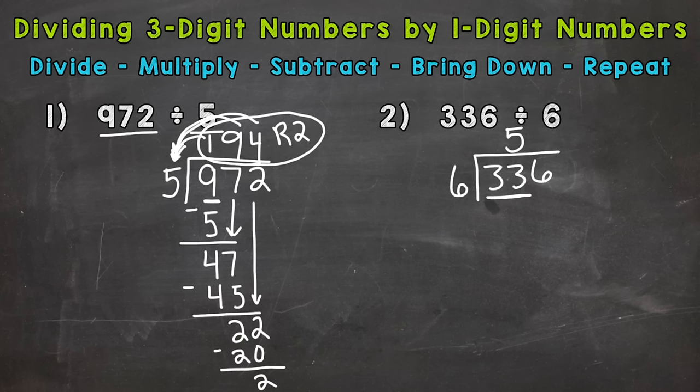Notice where I'm putting the 5. I'm putting the 5 above the 33, not above the 3. It needs to be placed above the 33. That's a common mistake there. So now we go through the following steps. Multiply. Five times 6 is 30. Subtract, 33 minus 30 is 3. Bring down. And repeat.